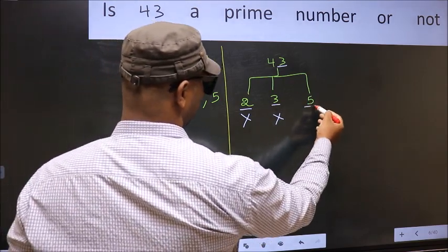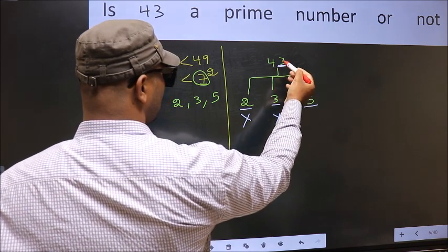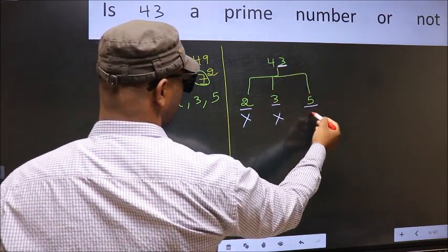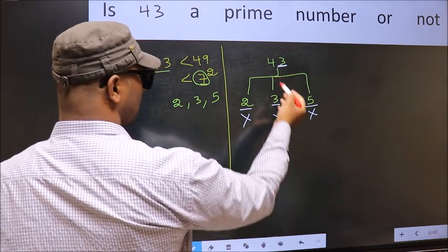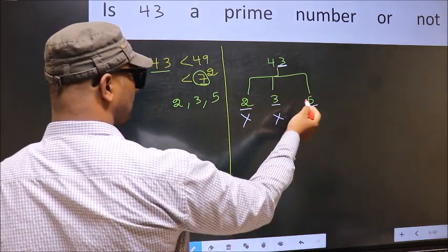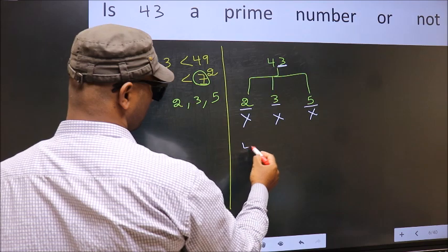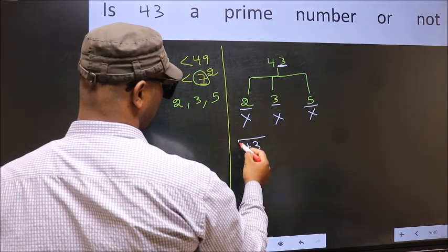Next number 5. Last digit is neither 0 nor 5, so this is not divisible by 5. So 43 is not divisible by any of these numbers. Therefore, 43 is a prime number.